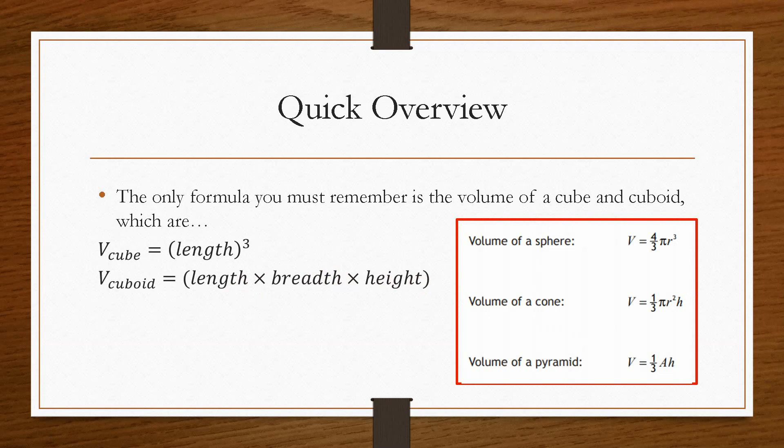Now, the ones that you don't have to remember, that will be given to you in the formula sheet, are the volume of a sphere, a cone, and a pyramid. So just remember, if you see one of these in the question, be sure to come back to the formula sheet and use the correct formula.